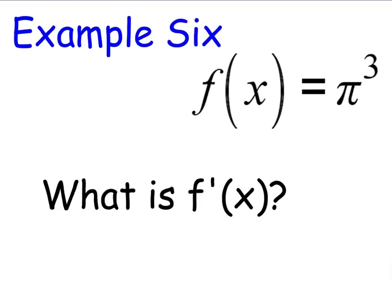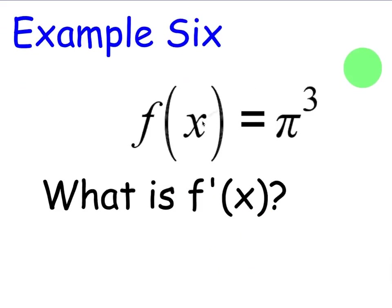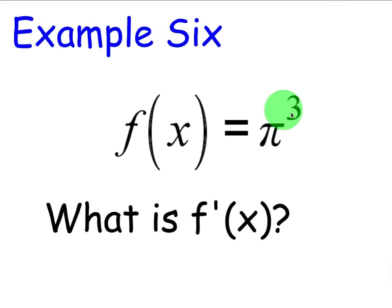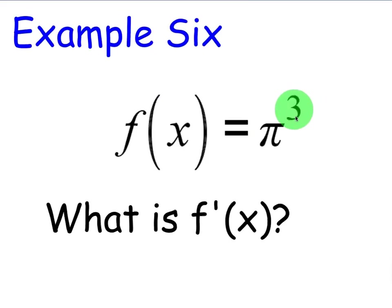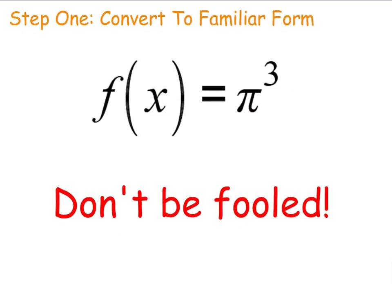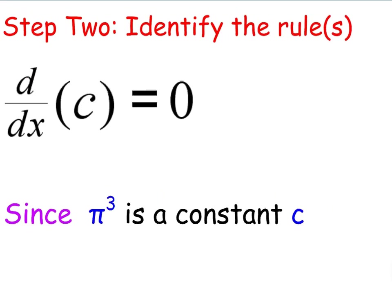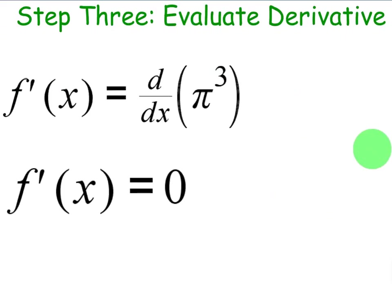Another example: f(x) = π³. What is f′(x)? Do not fall into the trap. The power rule only works when the base is a variable and the exponent is a number. Here, the base is the constant π and so is the exponent. A constant raised to a constant is still a constant, and the derivative of a constant is zero — so you cannot use the power rule. You will be using the constant rule: the derivative of π³ is zero. It is not 3π².